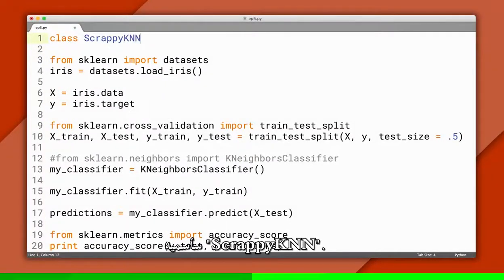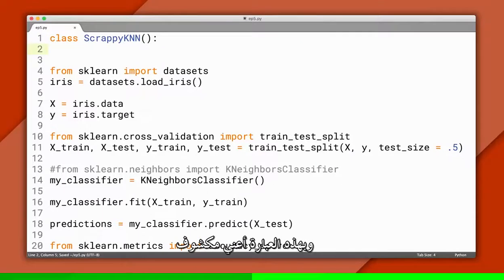I'll call it Scrappy KNN. And by scrappy, I mean bare bones, just enough to get it working. Next, I'll change our pipeline to use it.